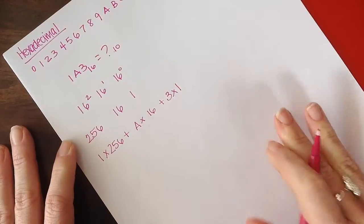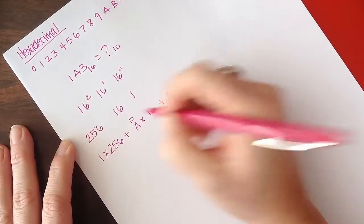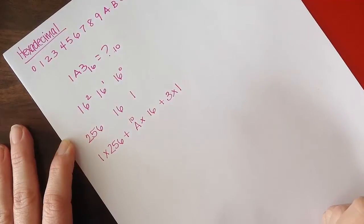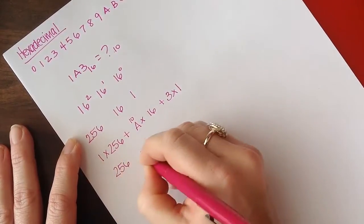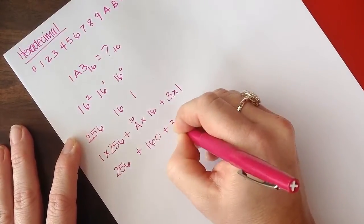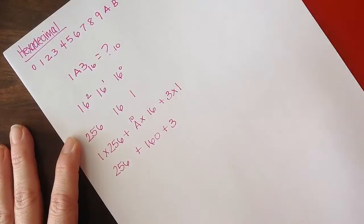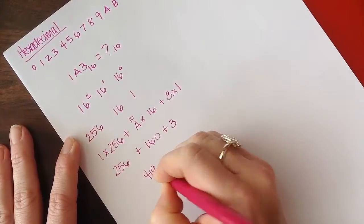So let's think about that. What is A? A is really 10, right? So that would be 256 plus 160 plus 3, and then when we add those up, 419 base 10.